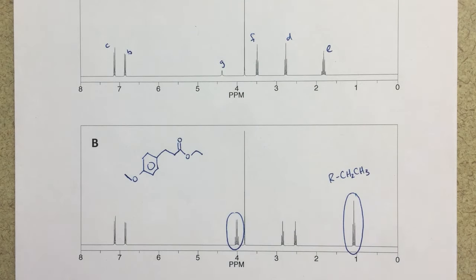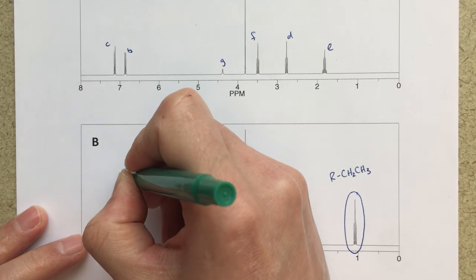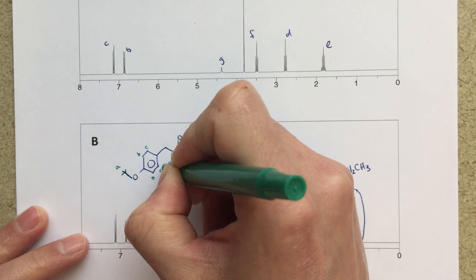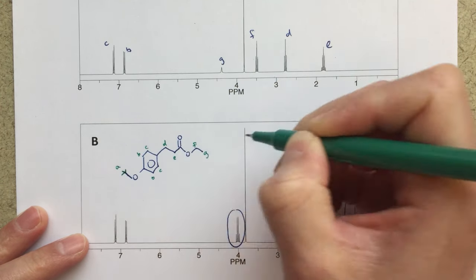So the next thing I would do is go through and label all of my peaks in C, sort of, if it makes sense. So we'll call this group here A, we'll call these B, C, D, E, F, and G.